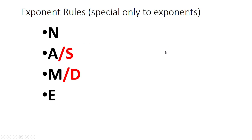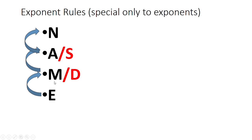In order to help us with our special rules today, I have an acronym on the screen: NAME. The way this works is we're going to start from the bottom and work our way up — starting at E, then M, then A, then N. This helps us understand what to do anytime we see a special exponent rule.